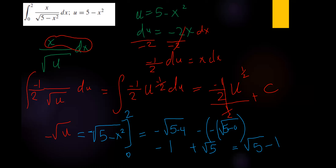This is Method 1: assume u, differentiate to find du, exchange x for u, then find the integration or definite integration. In Method 2, the process is the same but you make the substitution directly and change the interval of integration. Let's see this with an example.